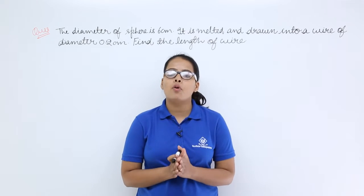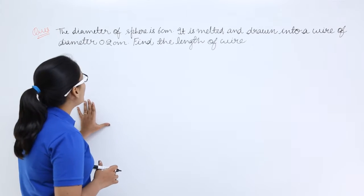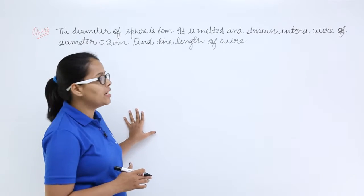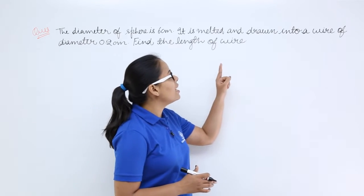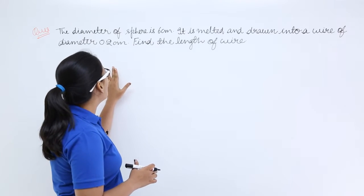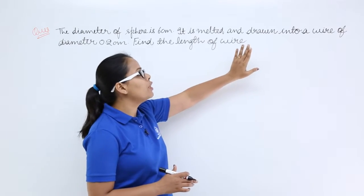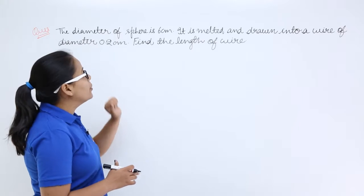Hello guys, let's understand this problem on volume of a sphere. The problem says the diameter of sphere is 6 centimeters. It is melted and drawn into a wire of diameter 0.2 centimeters. Now you need to find out the length of the wire drawn from the sphere.